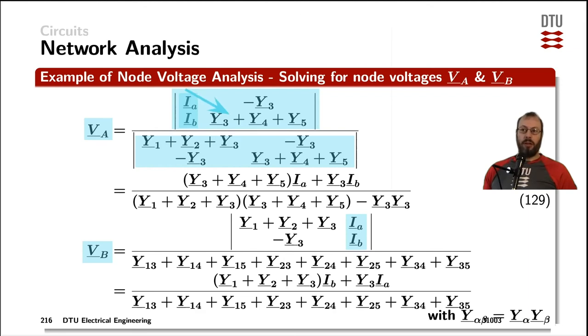Now, solving the determinants is simply multiplying from the upper left corner to the lower right corner and subtracting the opposite direction, which leaves us with the denominator here. And doing the same thing for the numerator, multiplying the Y1 plus Y2 plus Y3 with Y3 plus Y4 plus Y5, and then subtracting minus Y3 and minus Y3 means that we are left with the multiplication of all of those admittances, and the Y3 cancels out.